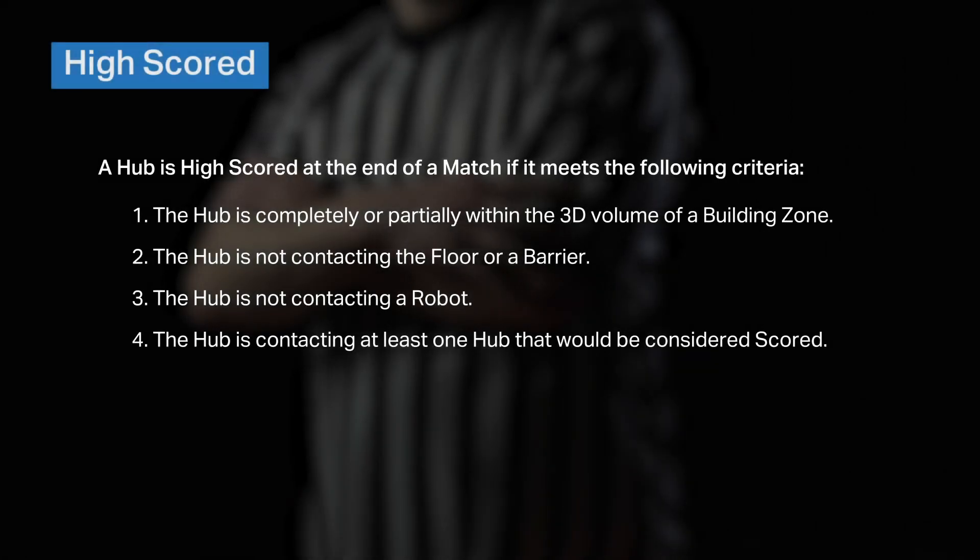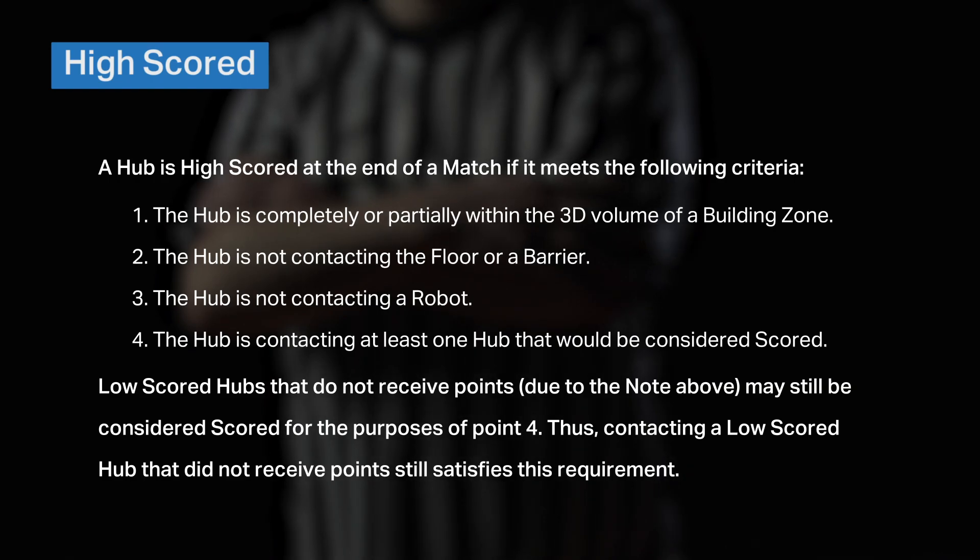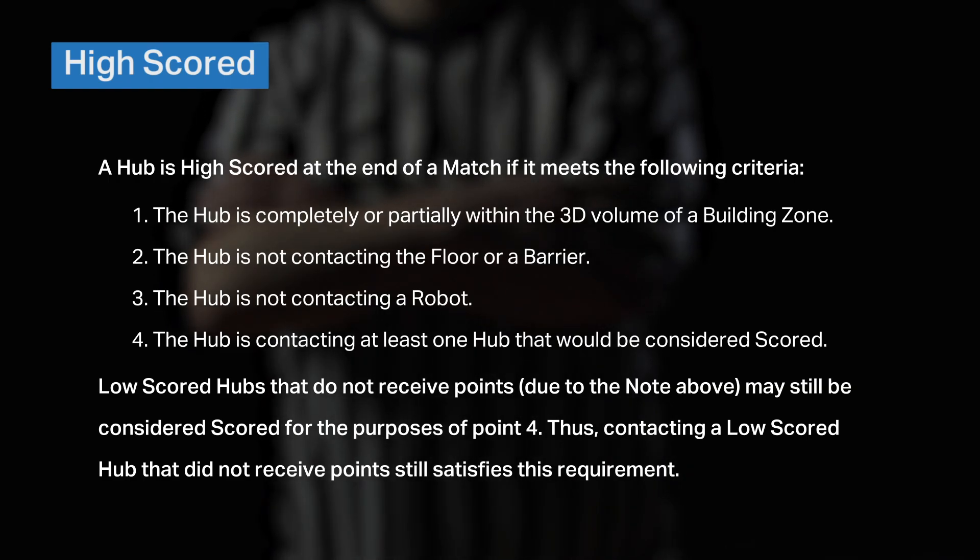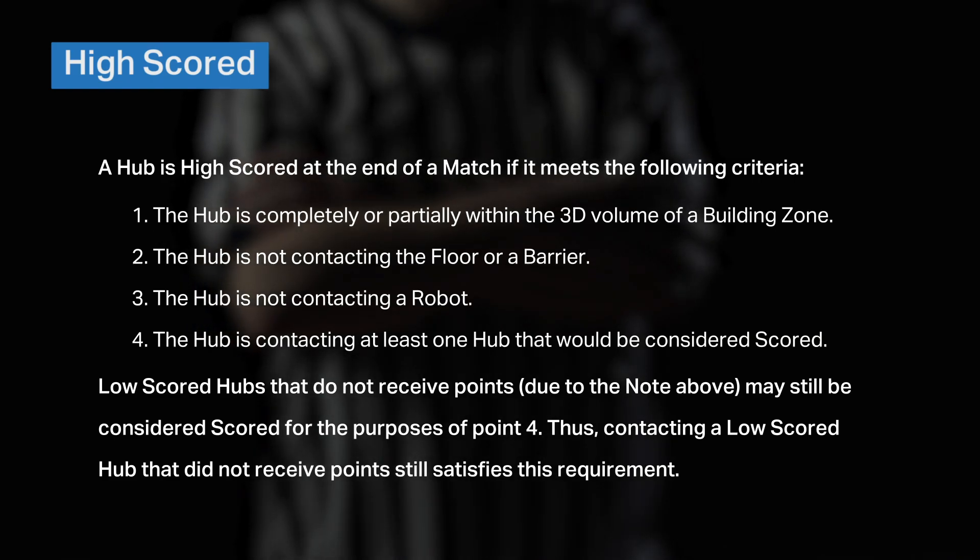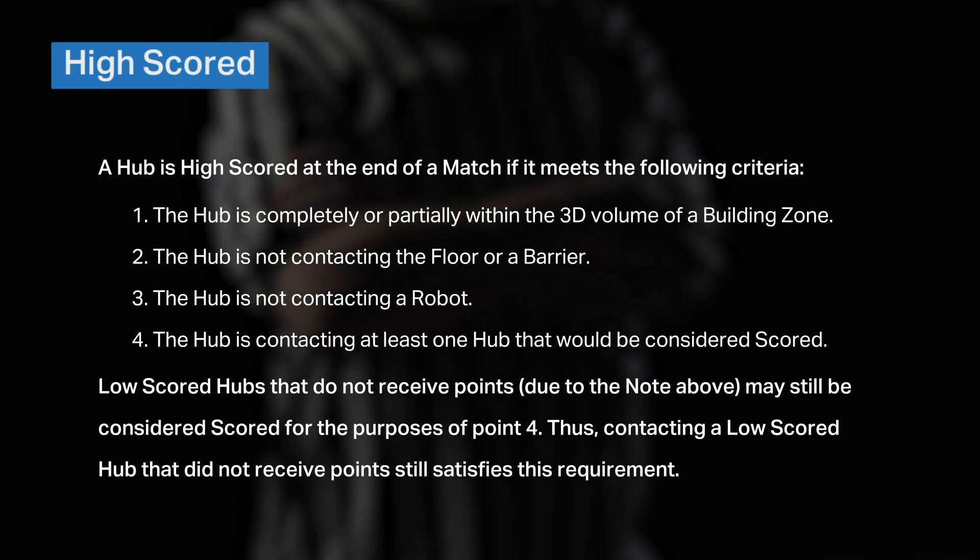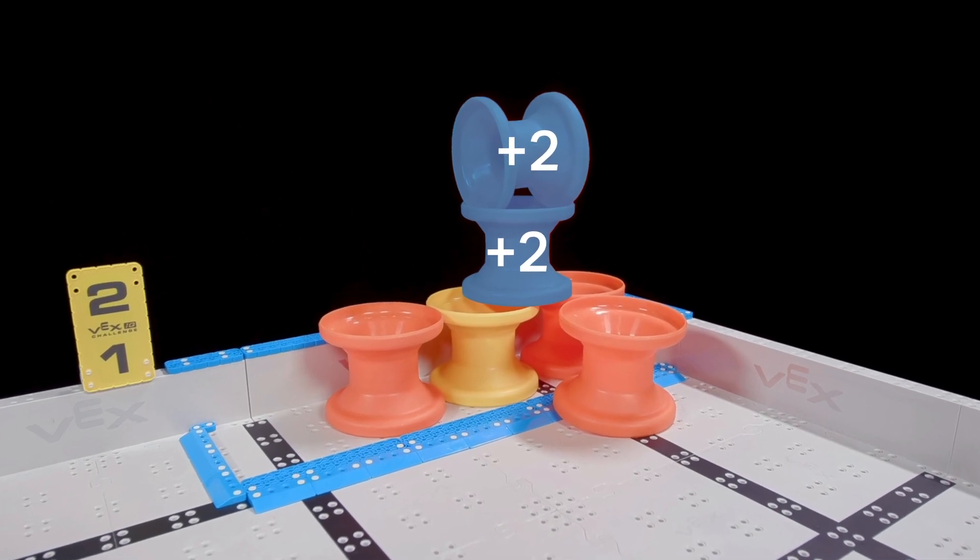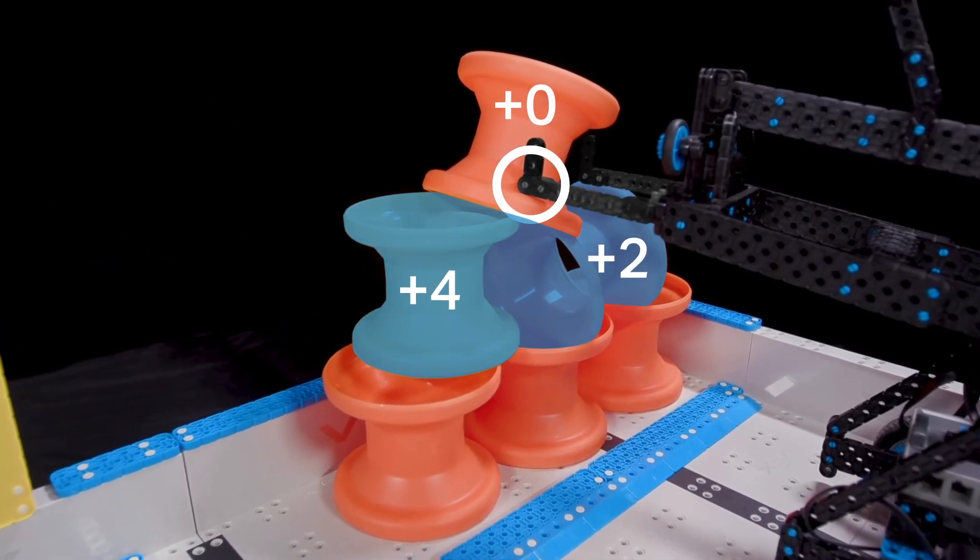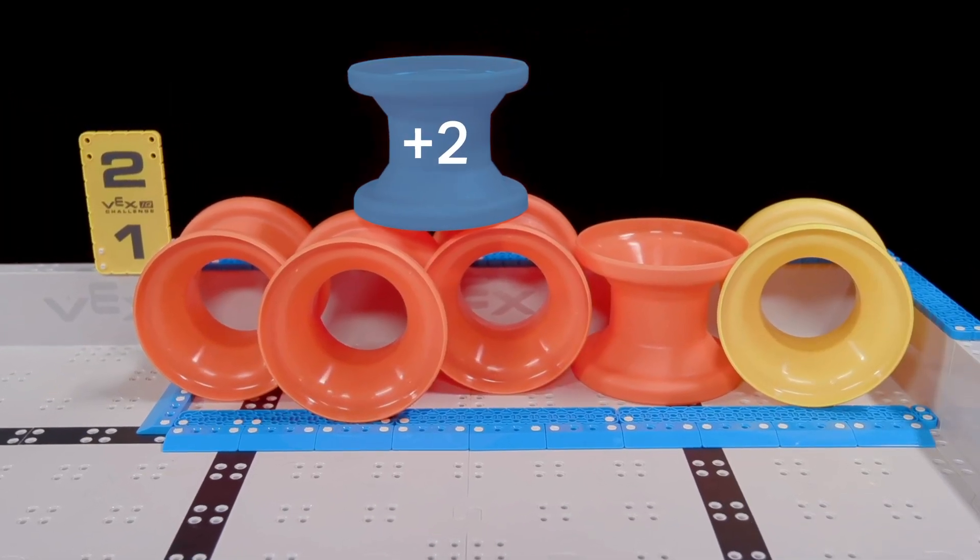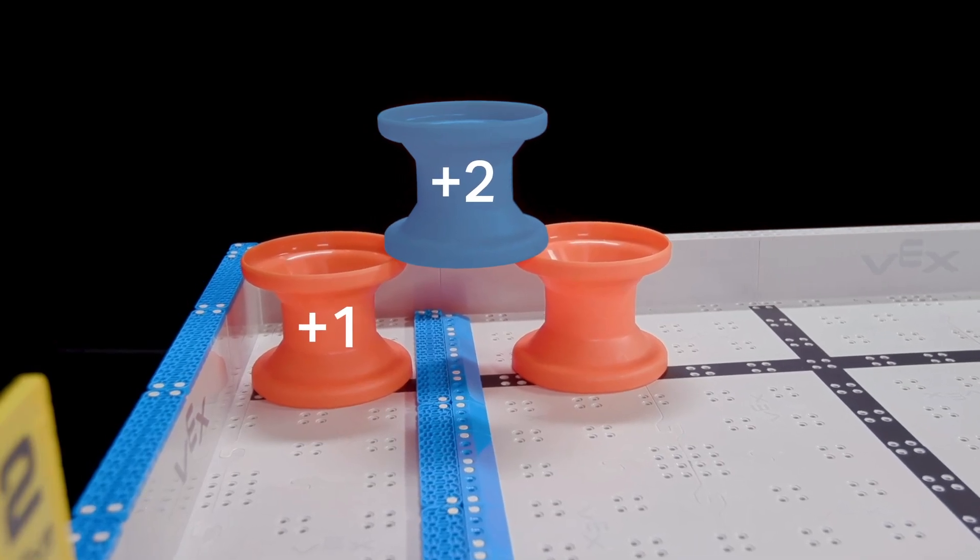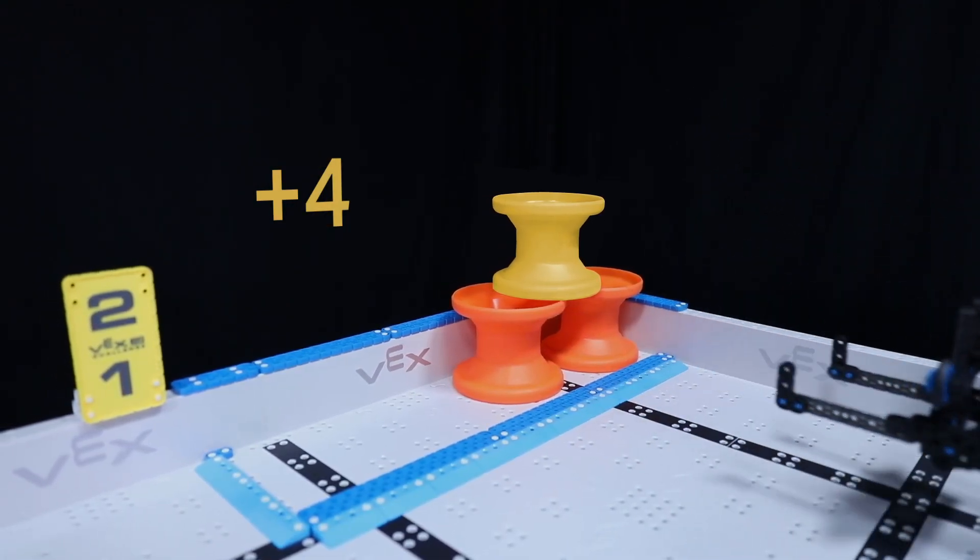The definition of high-scored also includes the following note: Low-scored hubs that do not receive points, due to the note above, may still be considered scored for the purposes of point four. Thus, contacting a low-scored hub that did not receive points still satisfies this requirement. So, with all of that in mind, here are some more examples of hubs that are or are not high-scored. High-scored hubs are worth two points each. High-scored bonus hubs are worth four points each.